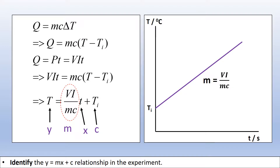I'm going to slightly rewrite that, representing the temperature change as the temperature at some moment in time minus the initial temperature. We're going to supply the thermal energy in the form of an electric immersion heater, so we replace Q with VIT. Rearranging to make temperature the subject, we get a y equals MX plus C form, where the y-intercept is the initial temperature and the gradient is the potential difference times current divided by mass divided by specific heat capacity.